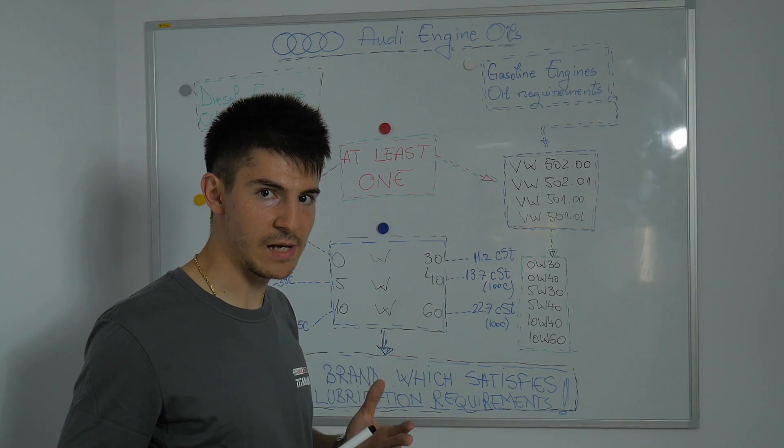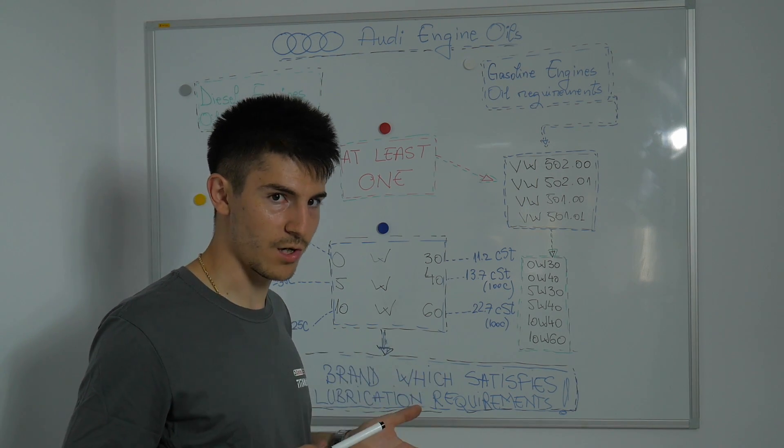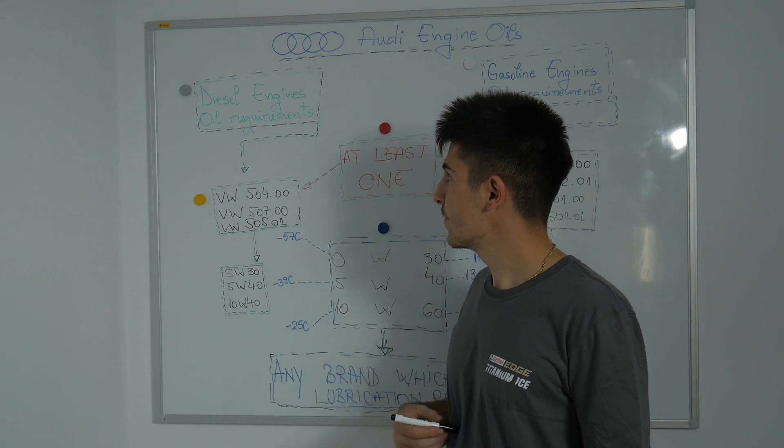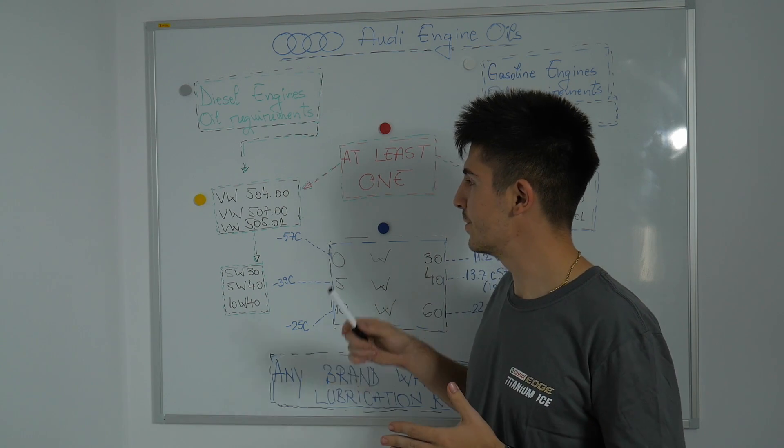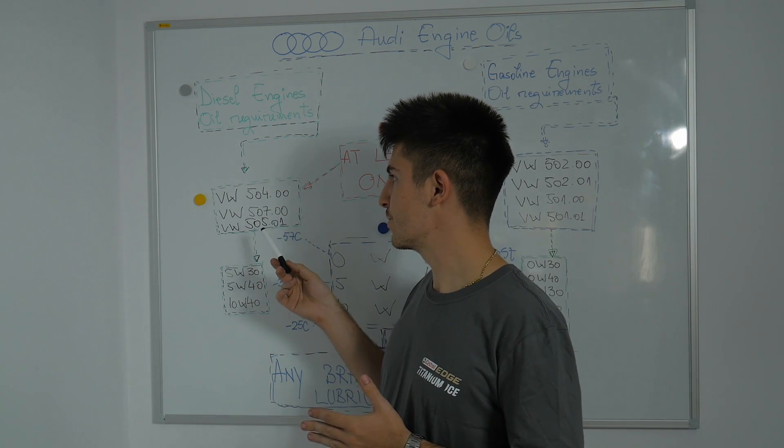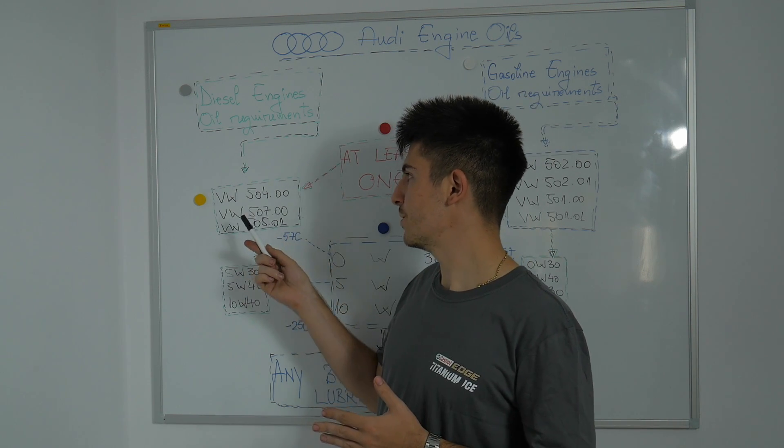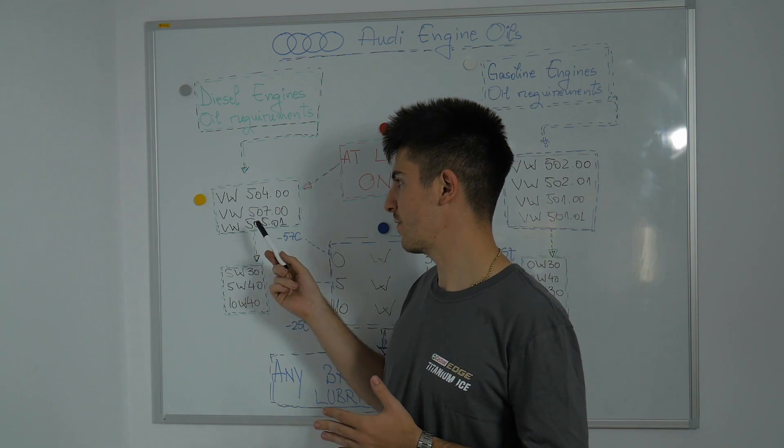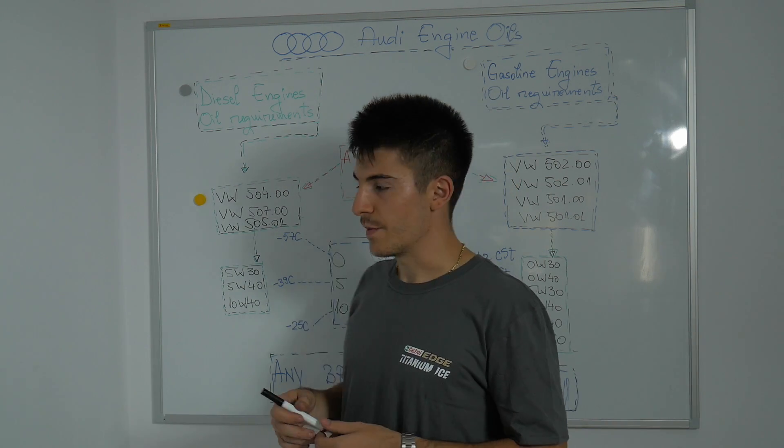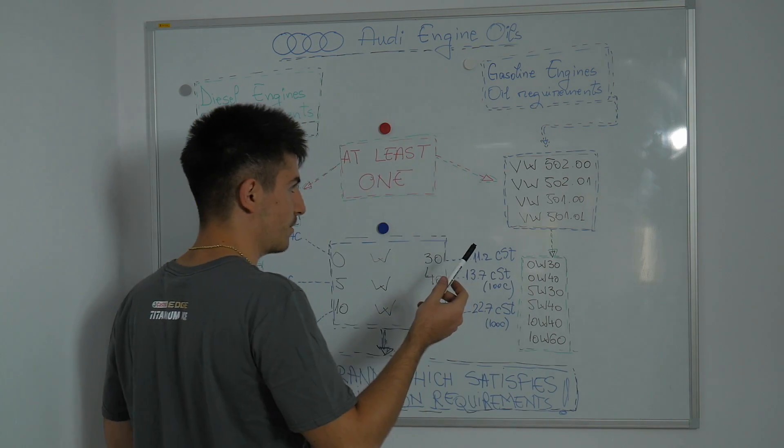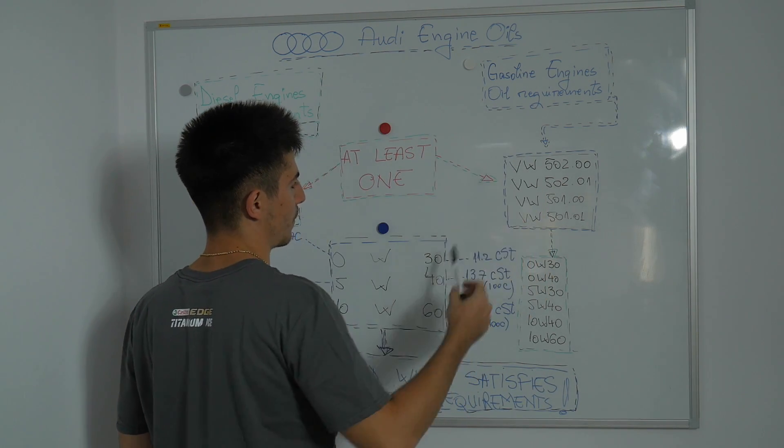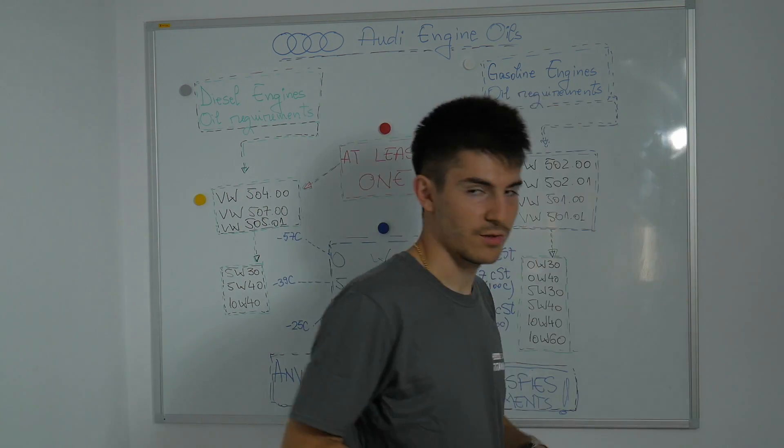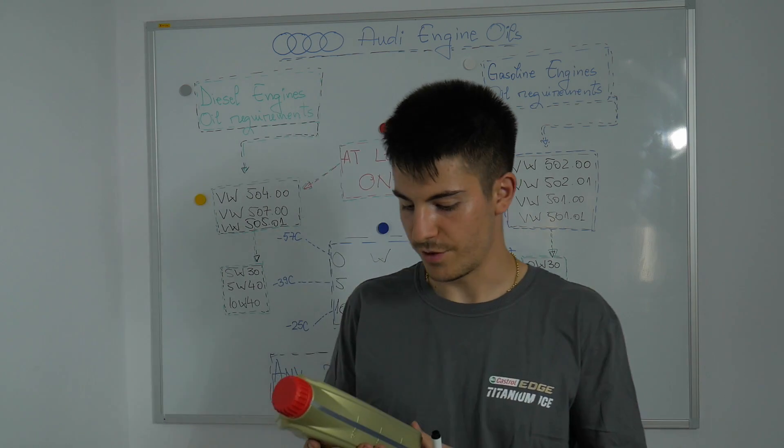Of course it depends on the type of engine that you have - diesel, gasoline, turbocharged, naturally aspirated, etc. Let's start with diesel engines. Generally speaking, Audi and Volkswagen have these lubrication requirements for diesel engines: VW 504, VW 507, and VW 505. There are other oil requirements as well. We have other oil requirements for gasoline engines, so pay attention to the oil that you're using.